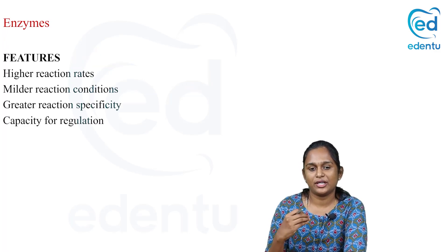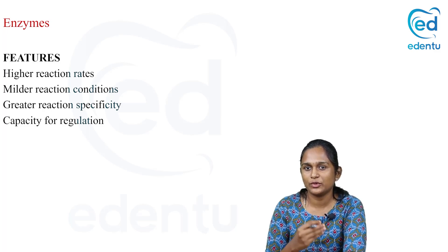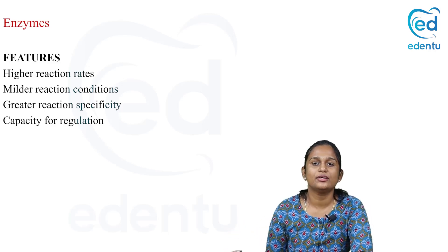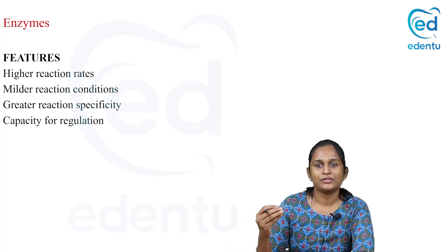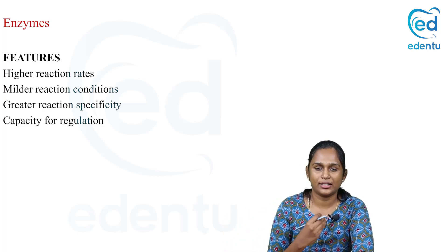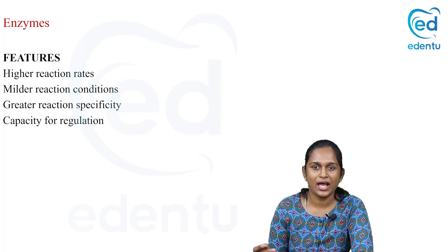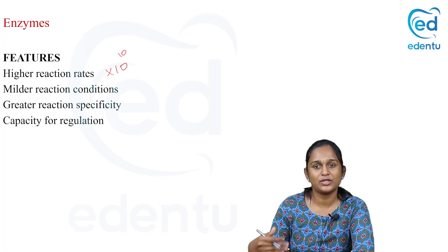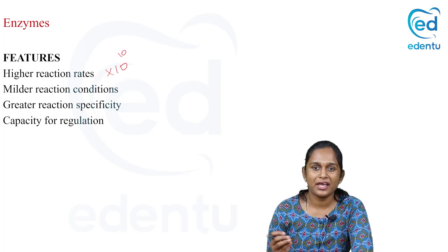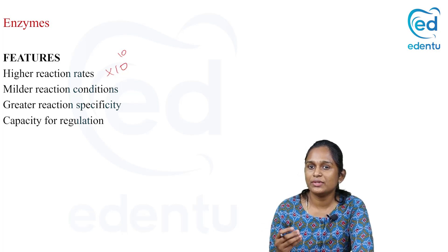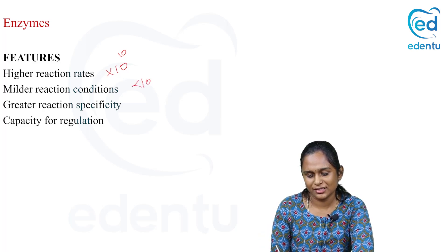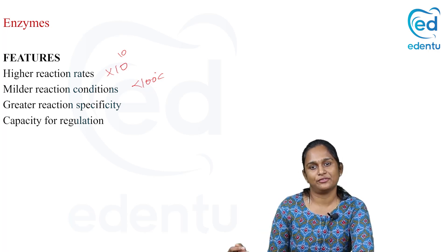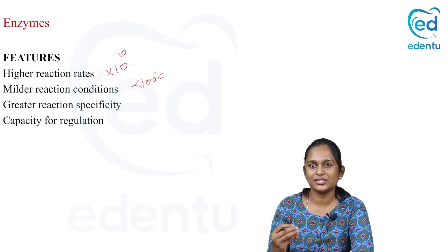So what are the features of enzymes? If you compare a reaction happening without enzyme to a reaction happening with the help of enzyme, the reaction rate will be very much higher for the enzyme-catalyzed reaction. Compared to the uncatalyzed reaction, the enzyme-catalyzed reaction will have a higher rate — around 10 to the power of 10 times the rate will be accelerated. Additionally, milder reaction conditions are required; for example, the temperature requirement for the enzyme to be active will be less than 100 degrees.